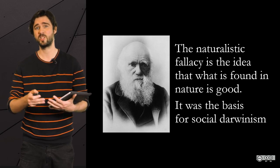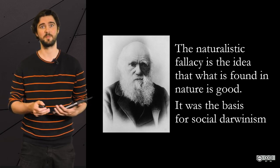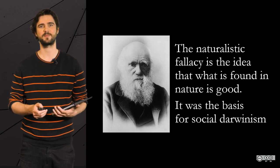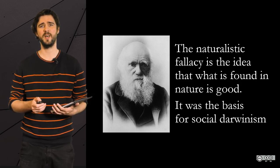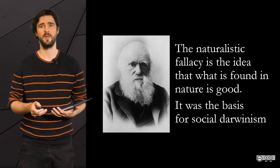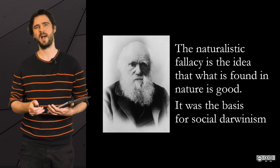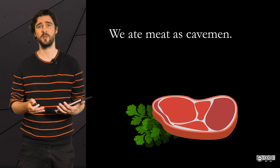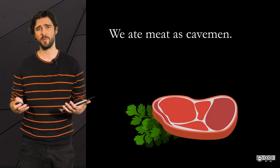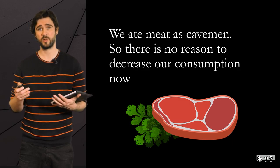A very famous example is Social Darwinism, which states that since in wildlife individuals and species compete against each other, it is normal that it should be the case in society too. However, in daily life, you will more likely hear appeals to nature in the field of alternative medicine — it is the type of fallacy that people use when they explain that homeopathy, plant remedies, and essential oils are good for you because they are natural. Well, so is arsenic. I would not recommend it for breakfast though.